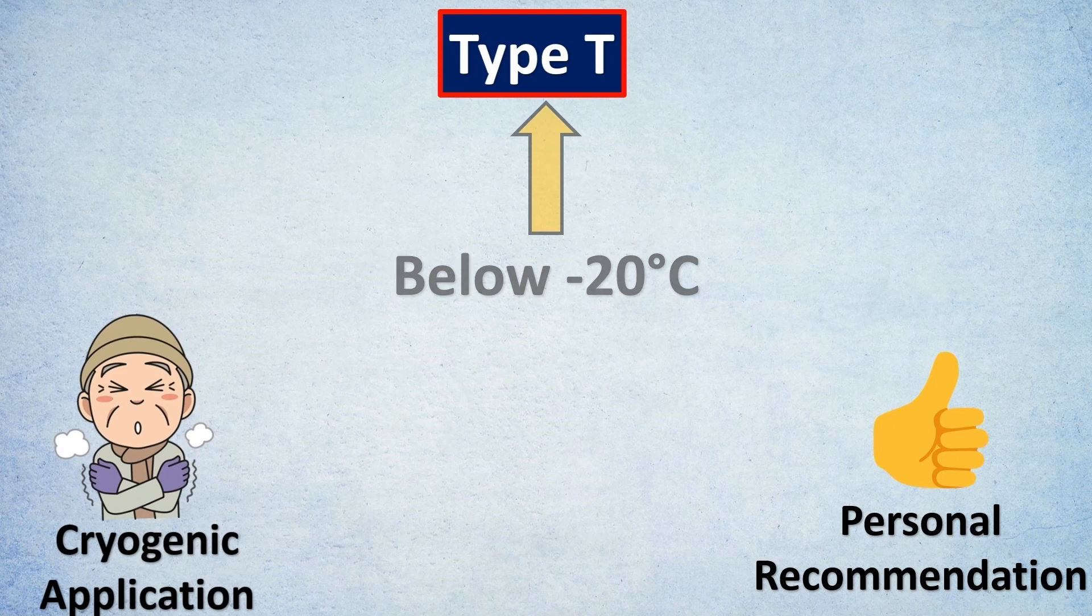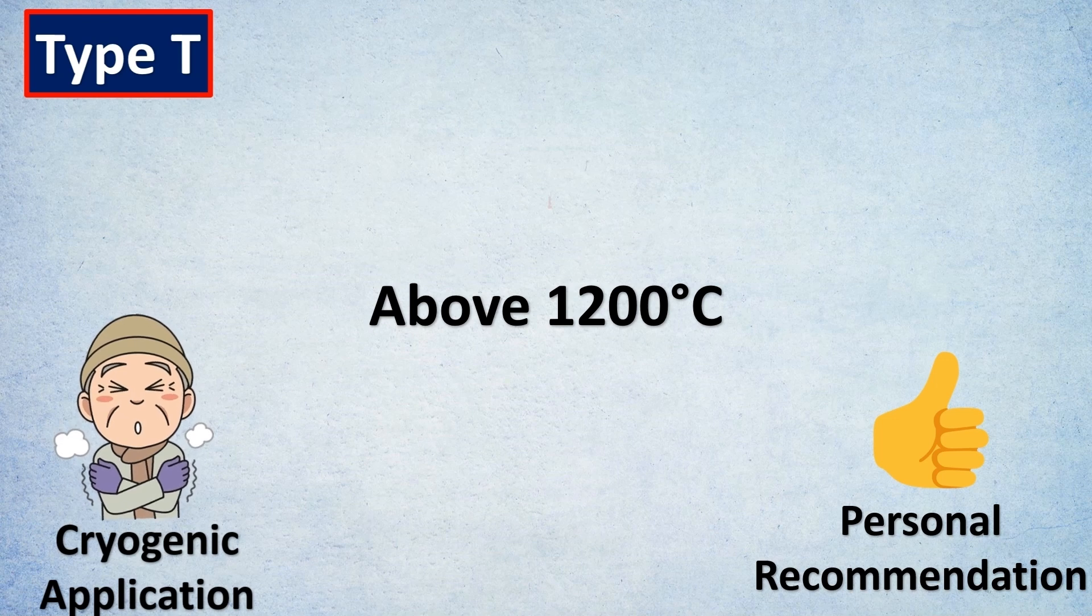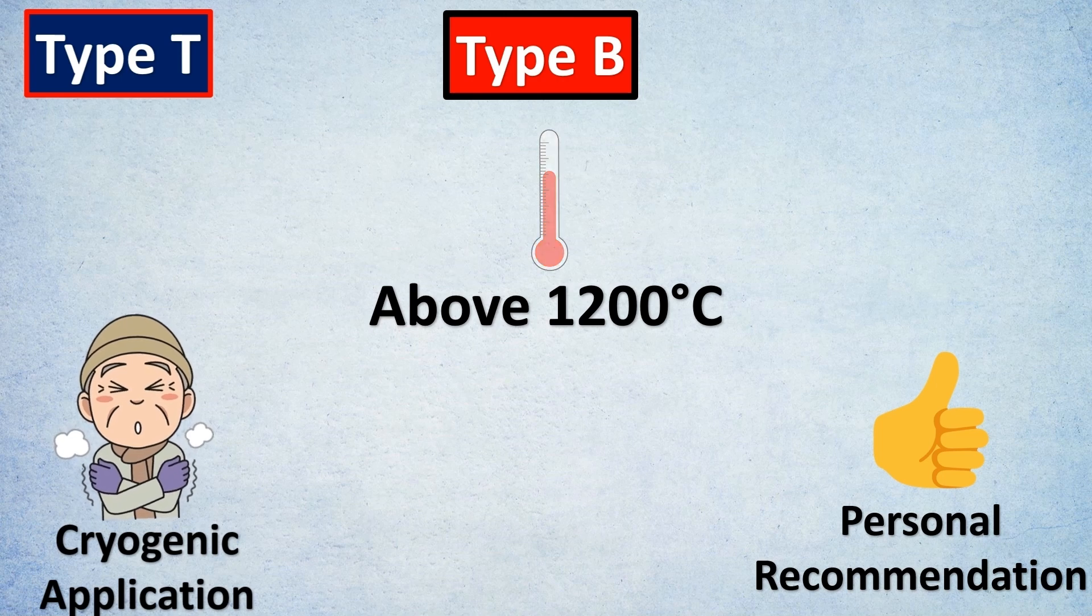For very high temperatures above 1200°C, Type B is a suitable choice. You need to discuss with an expert about it, but ideally you can use these as thumb rules while selecting.